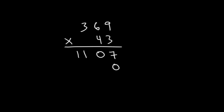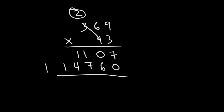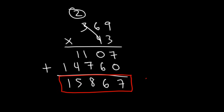Now let's add a 0. And then we have 4 times 9 which is 36. We'll carry the 3. 4 times 6 is 24 plus 3, that's 27. Carry over the 2. 4 times 3 is 12 plus 2, that's 14. So now we need to add. So we have 7, 6, 1 plus 7 is 8, 1 plus 4 is 5. And so the answer is going to be 15,867.